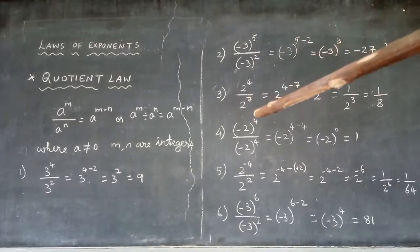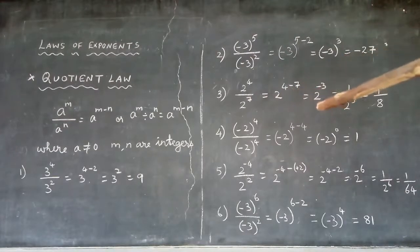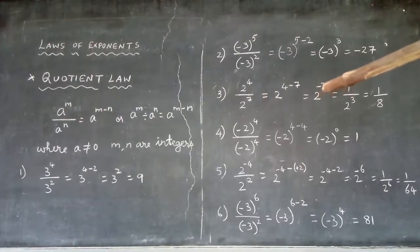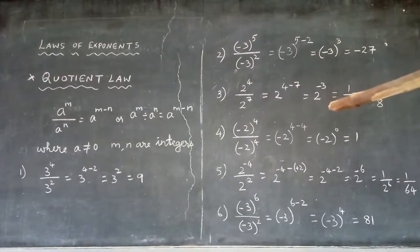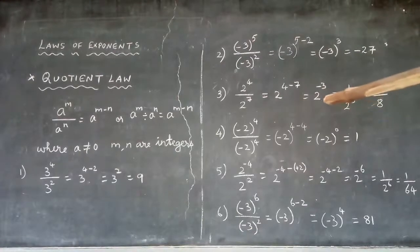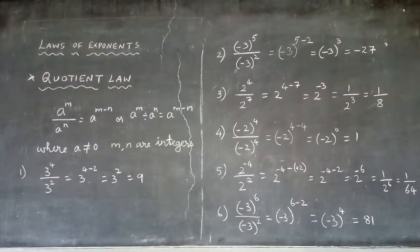Example 3: 2⁴ divided by 2⁷. We write this as 2^(4-7). Here we use the integer concept — different signs, so take the greater number's sign (minus) and find the difference: 7-4 = 3. So the result is 2^(-3). If they ask for the value, we use the negative exponent formula: 2^(-3) = 1/2³ = 1/8.